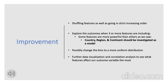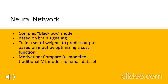The final model we tried is an artificial neural network. Neural networks are generally very useful for modeling and predicting on very complex datasets with many features. They're considered black box models, meaning it's difficult to interpret what the weights mean. They were developed based on biological brain signaling mechanisms, and the general concept is training a set of weights to predict output based on input by optimizing a cost function. Our motivation was to compare this deep learning model to the more traditional machine learning models — decision trees and k-nearest neighbors — on our relatively small dataset.